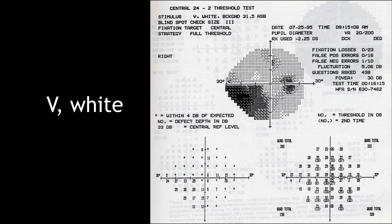At the bottom left we have defect depth. If the measured threshold value at each location is within 4 dB of the expected value, it will be displayed as a small circle. But if it is beyond 4 dB of the expected value, the defect will be displayed as a positive number. This is different from total deviation in single field analysis, where the defect is reported as a negative value, but here it is reported as a positive value.